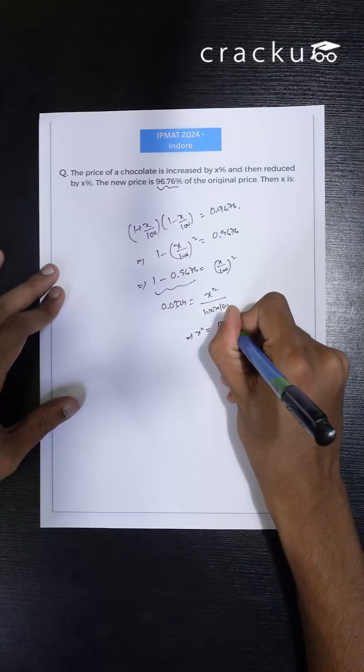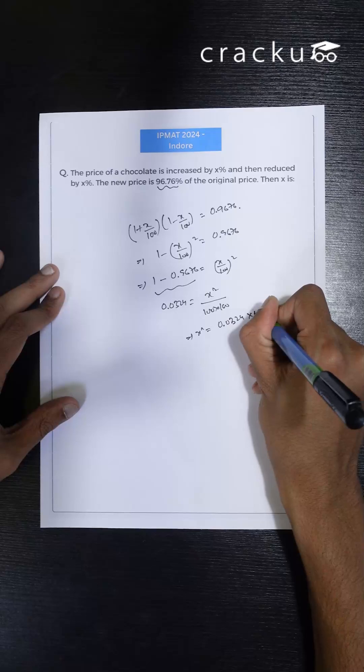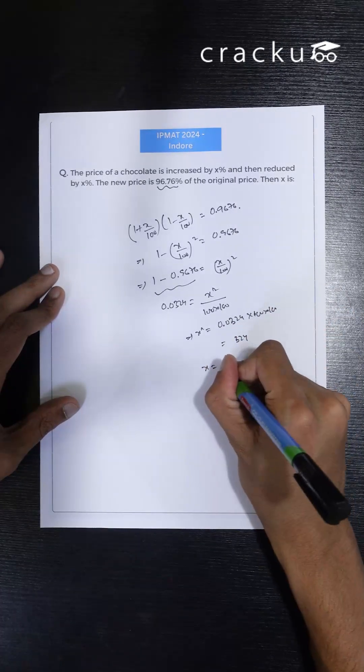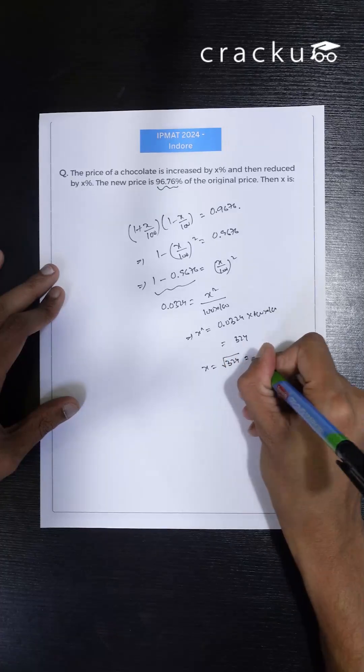So x square I can write as 0.0324 into 100 into 100. This is nothing but 324. So x square is 324. So x I can write as root 324 which is 18.